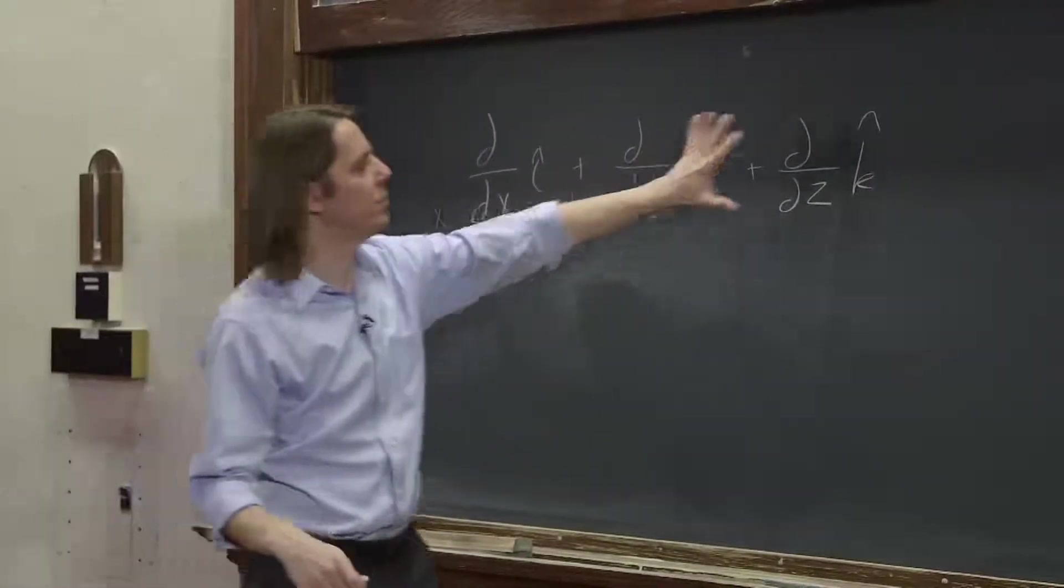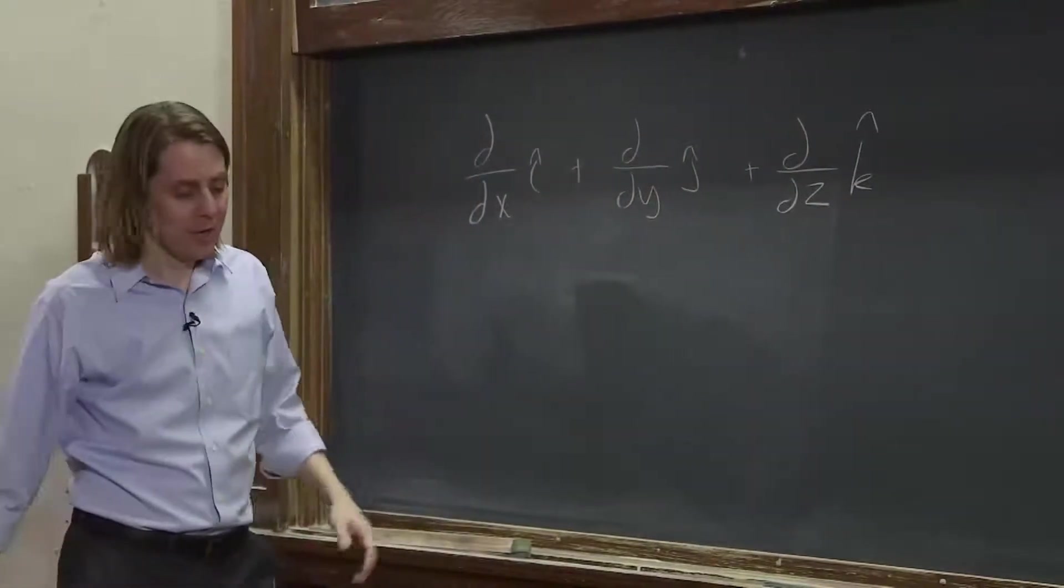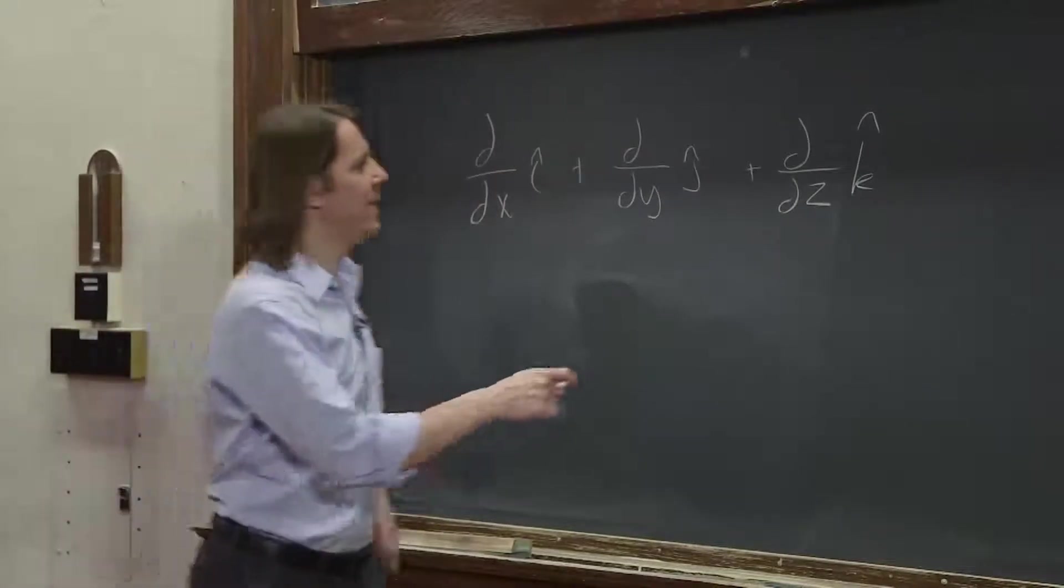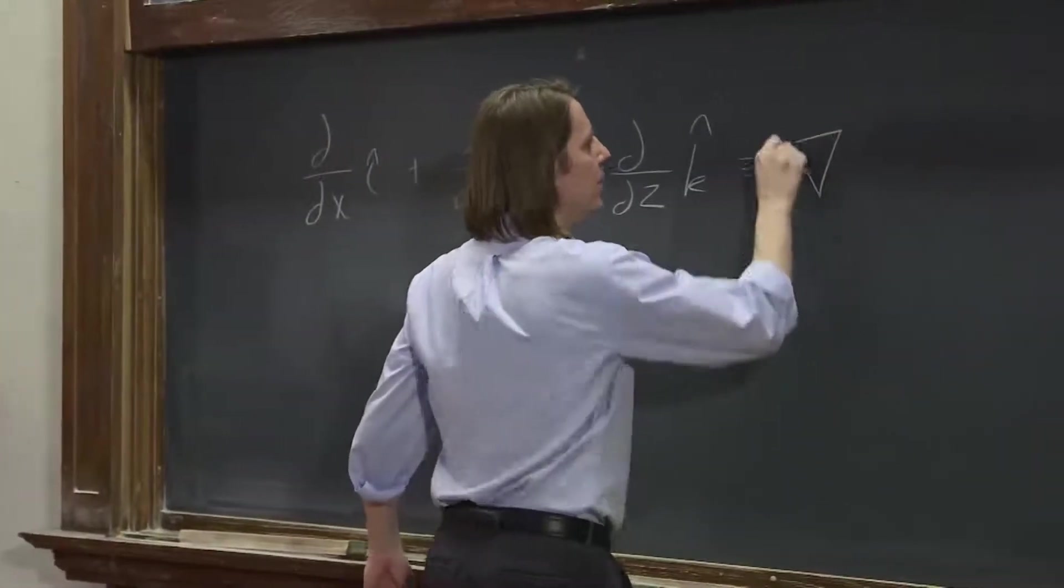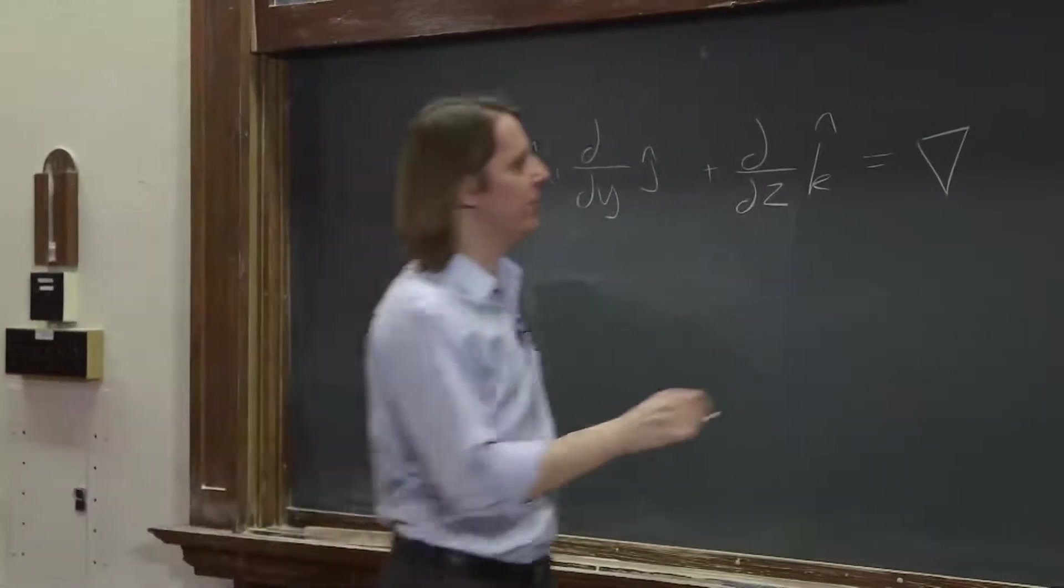Right now we just have two, so you can ignore this, but I'm trying to be general for Cartesian coordinates. This thing is what we call del. This is the differential operator for fields.